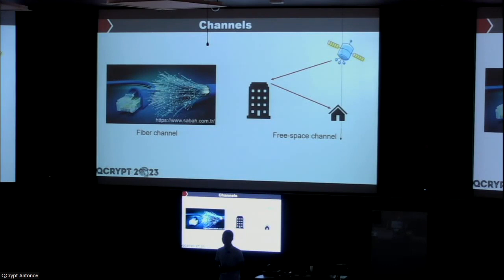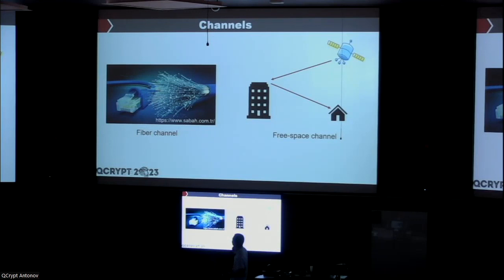There are also channels: we can use fiber and also free-space channels. A lot of work has been done and talked about in the fiber channel. For the free-space channel, if you can see each other you can send photons between two parties. You can also use a satellite in outer space to send the photons — just like the talk before, a very great work — and I will give some experiments about satellite-to-ground stations.